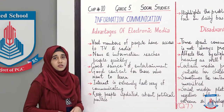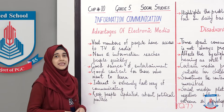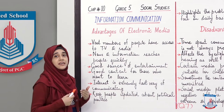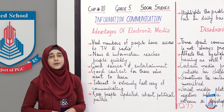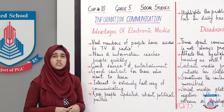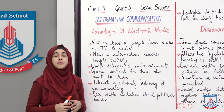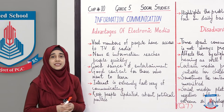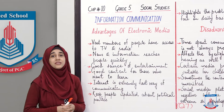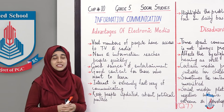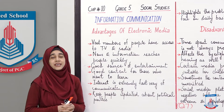So now let's start with advantages of electronic media. First, vast numbers of people have access to television and radio. As you know, TV is present in many homes, and where TV is not available, at least a radio is present — and now mobiles also have radio. Even in remote areas where cable doesn't reach or there are electricity issues, radio signals definitely reach. So electronic media has much greater access compared to print media.